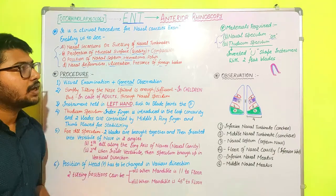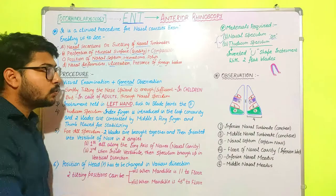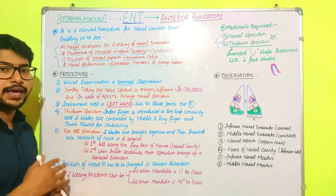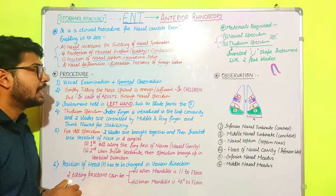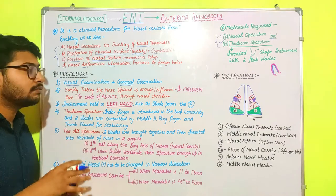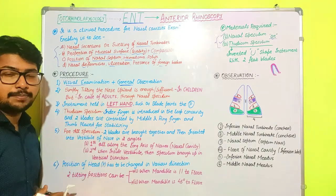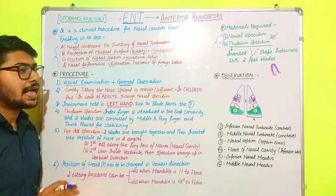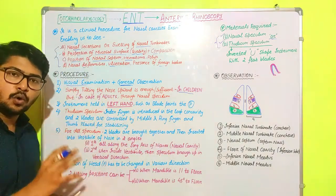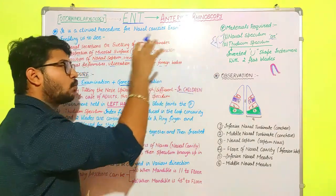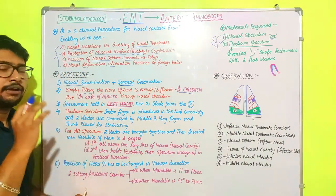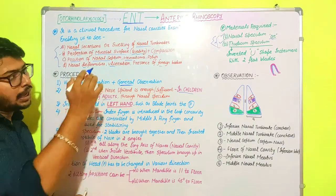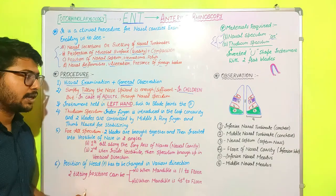Moving to the procedure: first, note the general visual examination of the patient as done before otoscopy. Anterior rhinoscopy can be performed in two ways. In the case of children, no instrument is required — simply tilting the nose in the upward direction is enough to get the anterior rhinoscopy view. In the case of adults, we must use either of the two instruments.